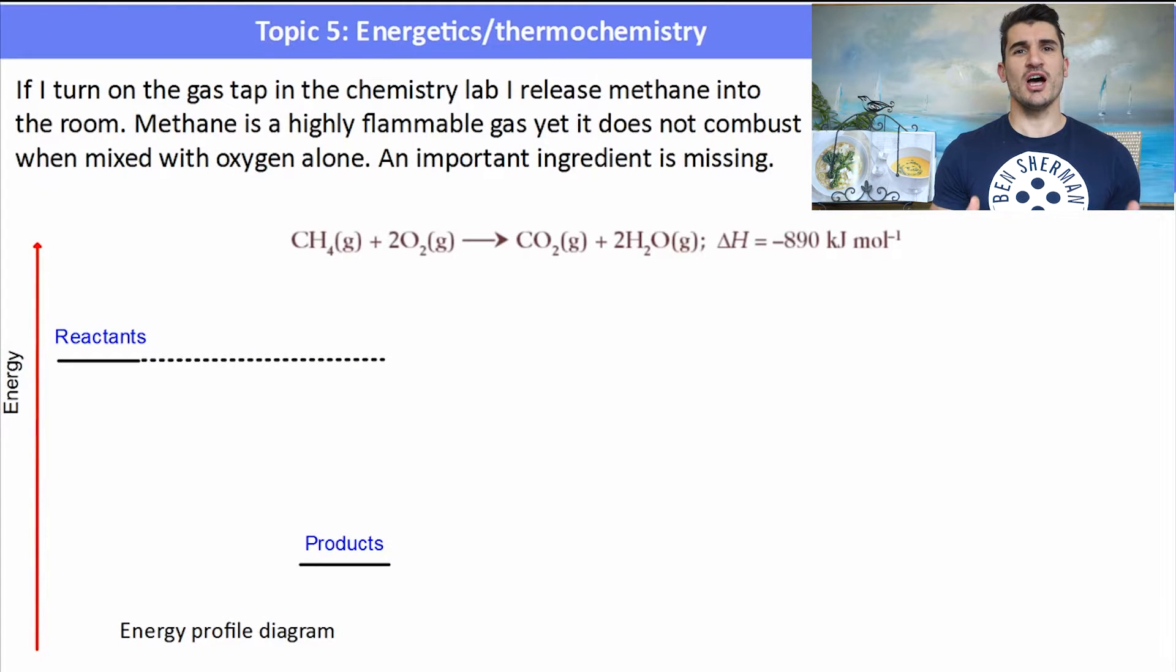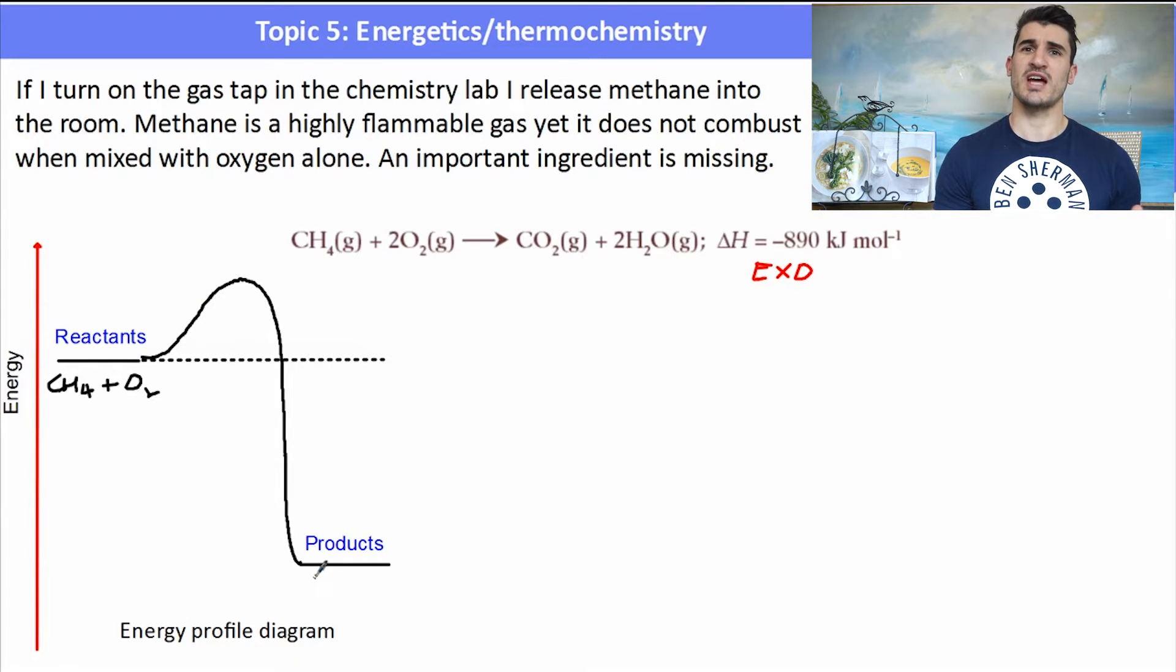Now if I've got a thermochemical equation, I might be asked to draw what we call an energy profile diagram. And an energy profile diagram shows the relationship of the reactants and the products. So here we have methane being reacted with oxygen like in the lab. We have our reactants, methane and oxygen. Because it's exothermic, they have more energy than the products. And we get this little curve which has a hump in it. And then it forms the products which are carbon dioxide and H2O. Now this little bit here. This is described as the activation energy, the EA.